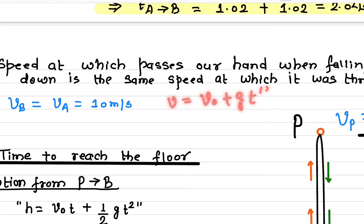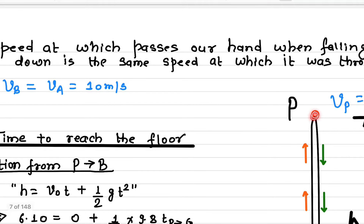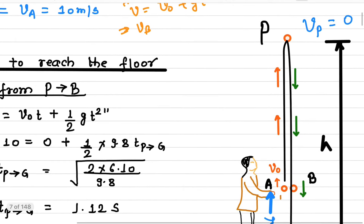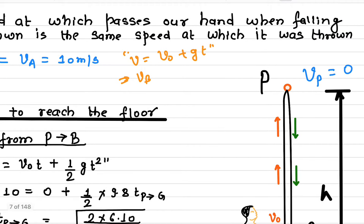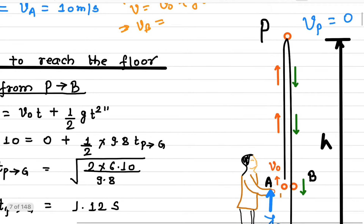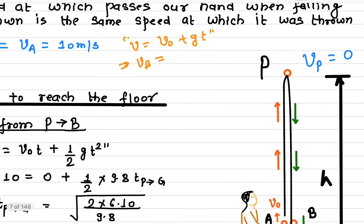You can also verify this mathematically. For the motion from P to B, use v = v₀ + gt, where v₀ is zero (velocity at the peak) and t is 1.02 seconds. So v = 0 + 9.8 × 1.02 = 10.10 meters per second, confirming the speed at B is approximately 10 meters per second.